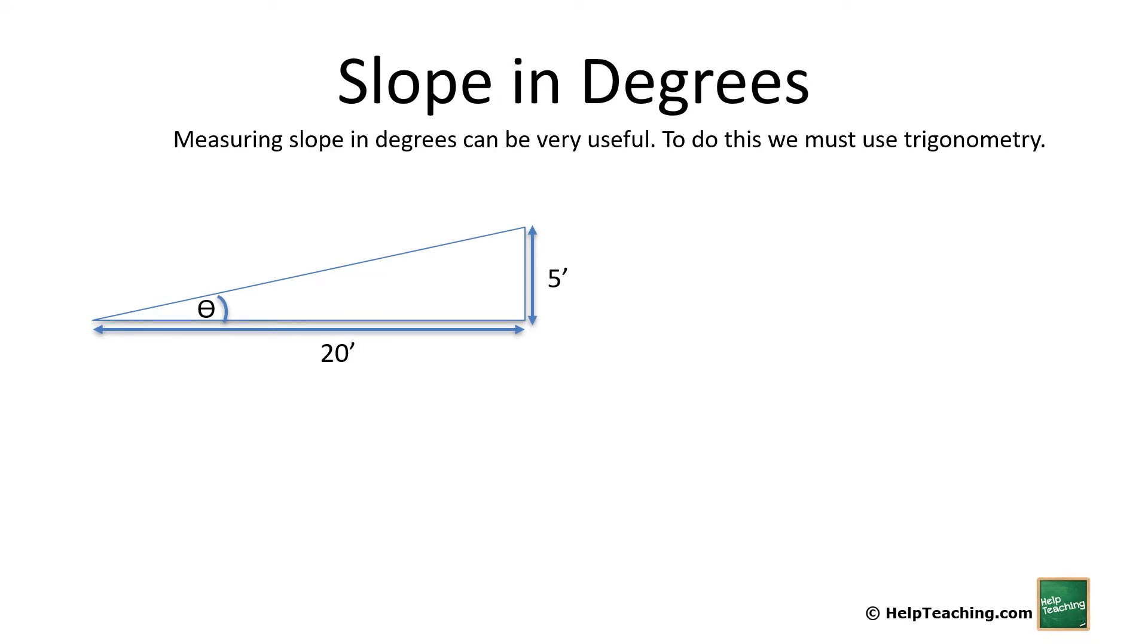So if you're using an inclinometer or often a digital level, things like that, it can be handy to use angles in degrees. For this we need trigonometry.